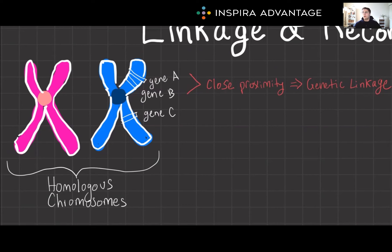Our genetic information is stored in genes on chromosomes. If you've made it this far on your MCAT, this is not news to you. Sometimes genes stick together due to proximity — we call this genetic linkage. But nature also has mechanisms to mix things up and shuffle things around, creating genetic diversity through various forms of recombination. And the MCAT loves to test on recombination.